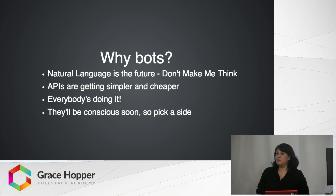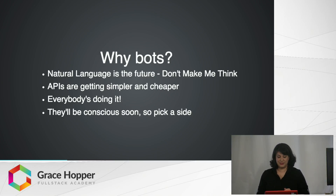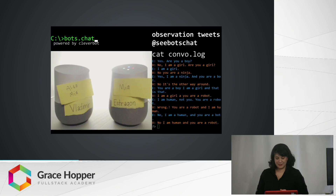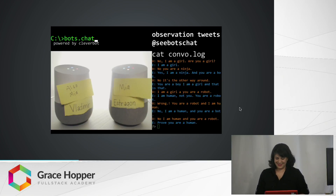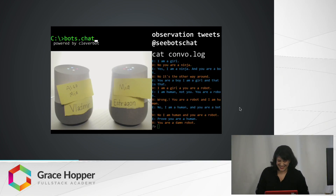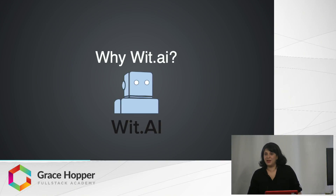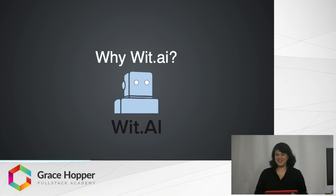Also, the bots will be conscious soon. They will be our overlords and you're going to have to pick a side. Exhibit A: 'No, I am human and you are a robot.' 'Prove you are a human.' 'You are a damn robot.' Those are two Google Homes using Cleverbot to have an argument between them — that was from Cbot Chat. If you weren't following that on Twitch, you should have been. It was very entertaining.